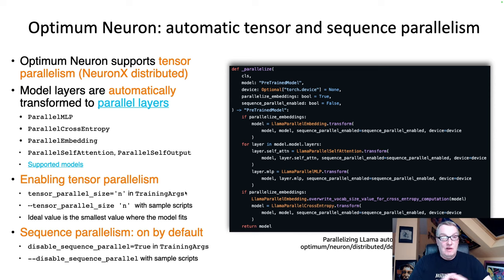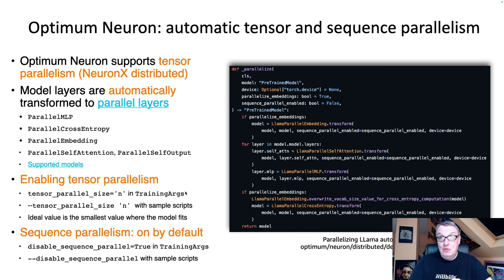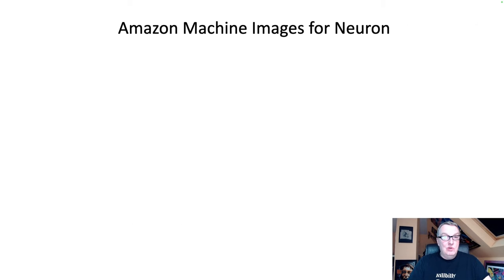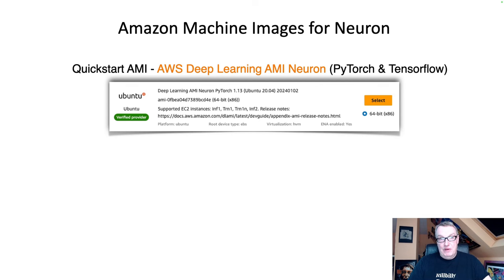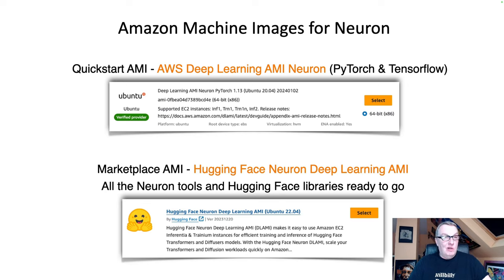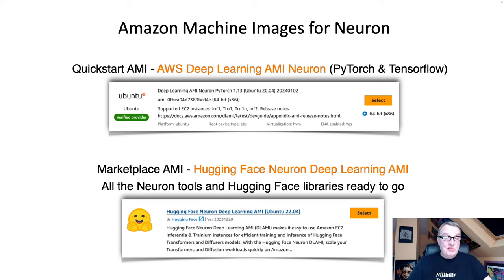Optimum Neuron is bringing these fancy techniques to everybody — you don't need to tweak or change your model code. Optimum Neuron will automatically do that for you. Now we want to see this in action. Before we do, I want to remind you that you don't need any special setup. There are a couple of AMIs you can use: the Deep Learning AMI Neuron from AWS, or our Hugging Face AMI, which comes with Optimum Neuron and all the Hugging Face libraries out of the box. Let's fire up a Trainium instance.